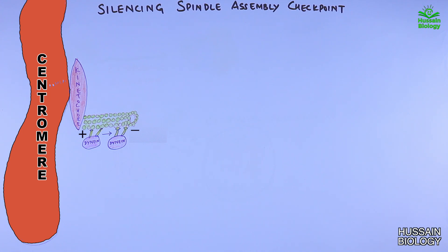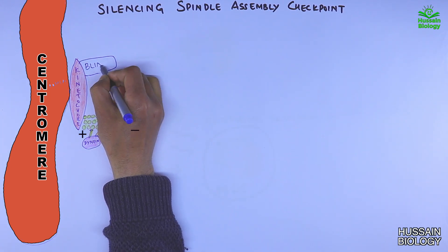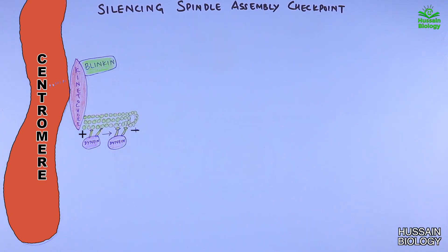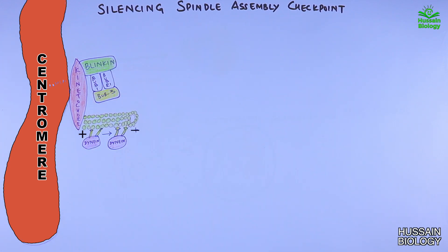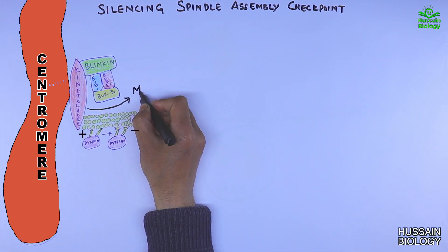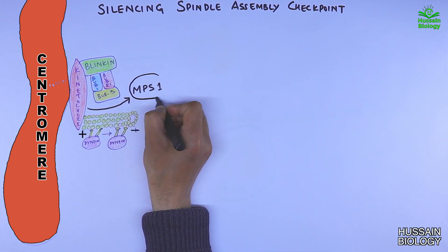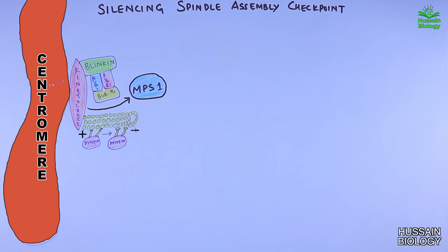Getting back to the silencing of the SAC: first of all, the Blinkin protein binds with the kinetochore and recruits many more proteins like BUB1, BUBR1, BUB3, and many more. We also see that the MPS1 protein leaves the kinetochore upon attachment of the microtubule to the kinetochore.